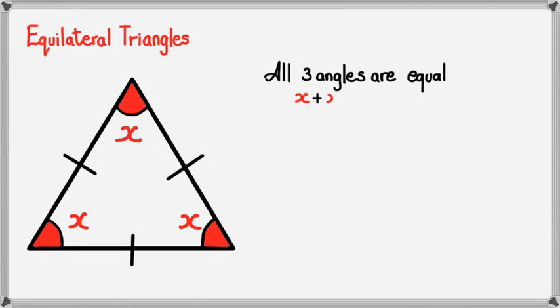So we've got x plus x plus x, which is all equal to 180 degrees, which means we've got 3x equals 180 degrees. Rearranging by dividing 3 on both sides, we're going to get x...